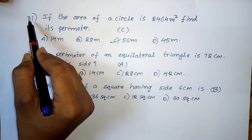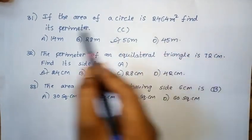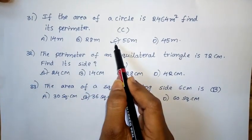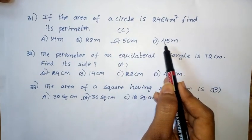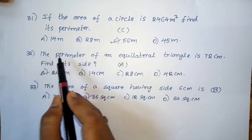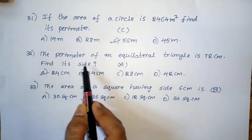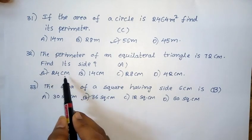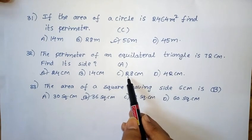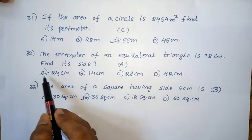Thirty-first question: If the area of a circle is 2464 square meters, find its perimeter. Option A: 14 meters. Option B: 28 meters. Option C: 56 meters. Option D: 45 meters. The right answer is option A — 24 centimeters.